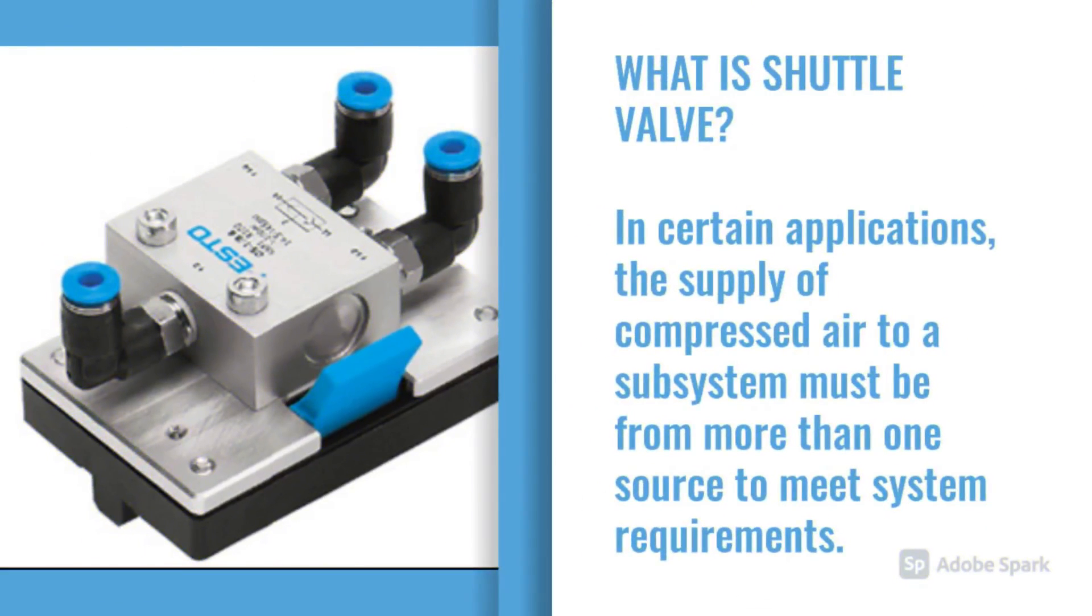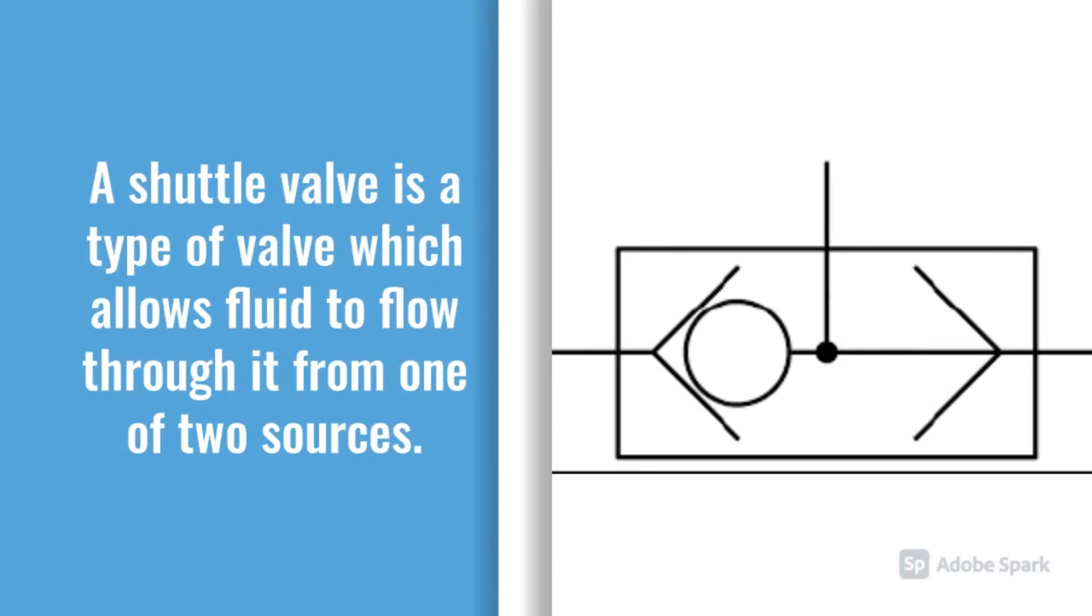In certain pneumatic applications, the supply of compressed air to a subsystem must be from more than one source to meet system requirements. A shuttle valve is a type of valve which allows fluid to flow through it from one of two sources.